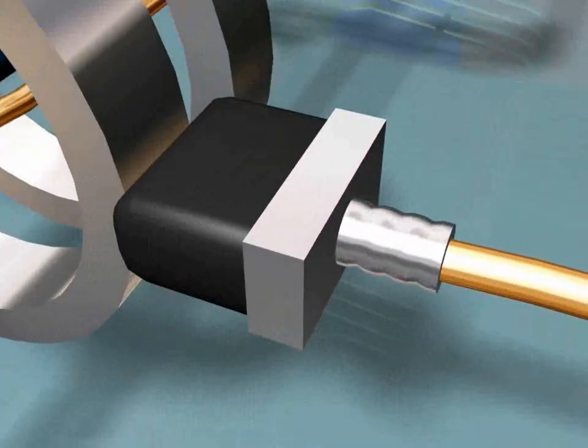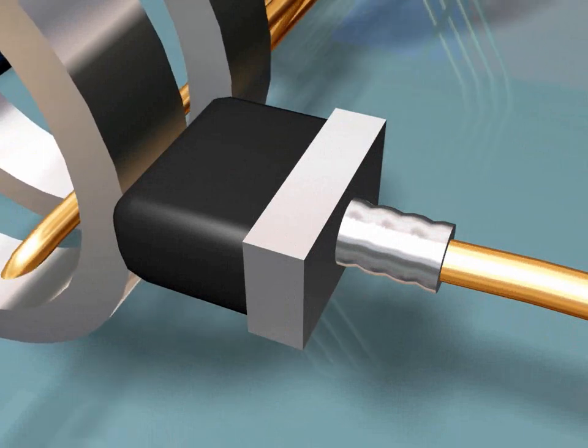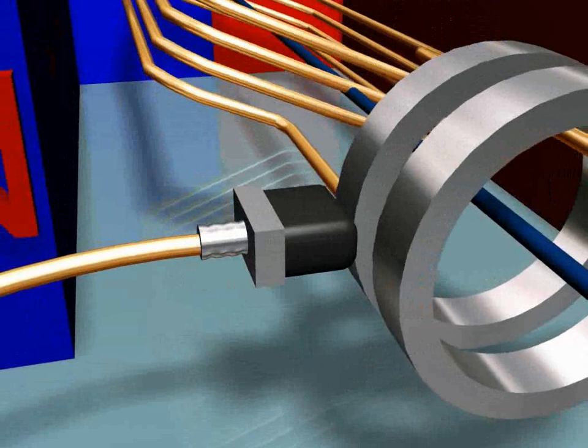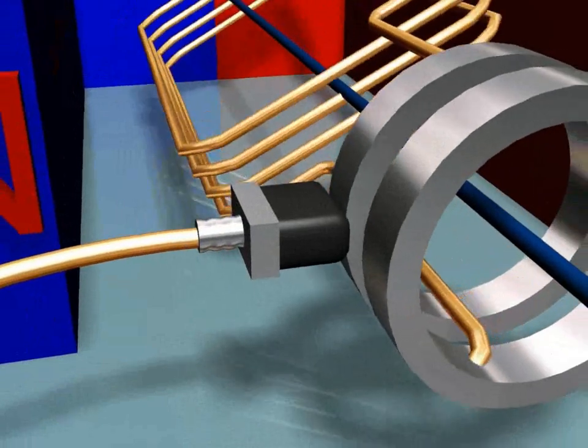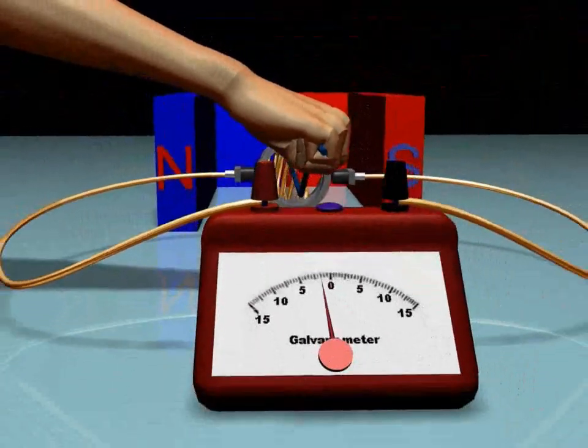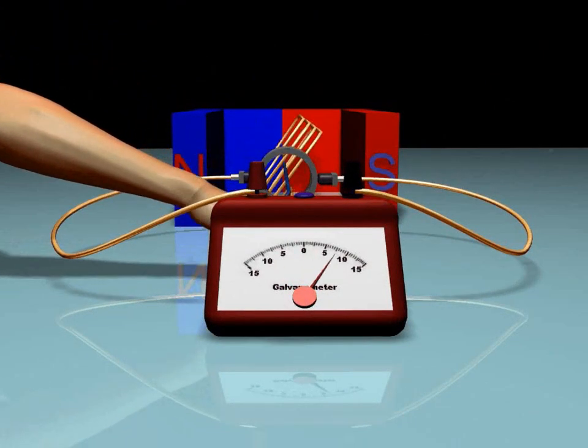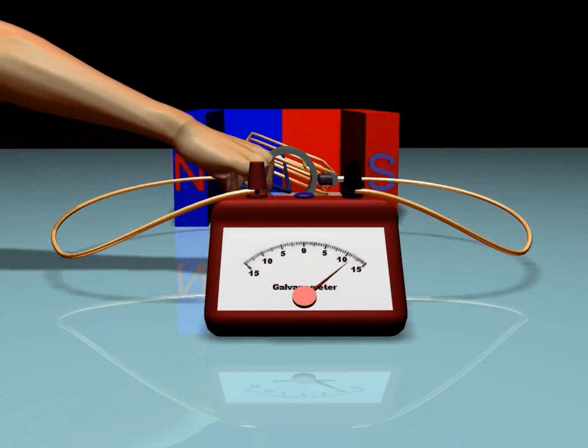Each slip ring slips on its own carbon brush to conduct the produced induced current to any external circuit. The galvanometer is used to indicate the passage and production, and it shows the direction of the induced current produced.